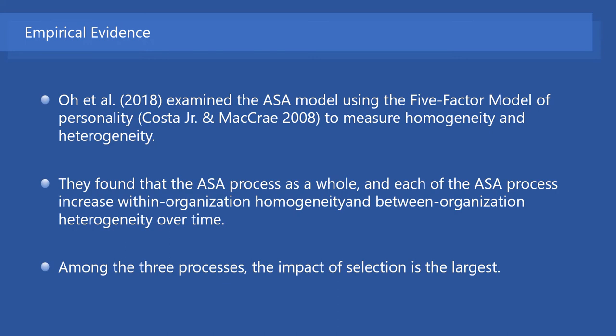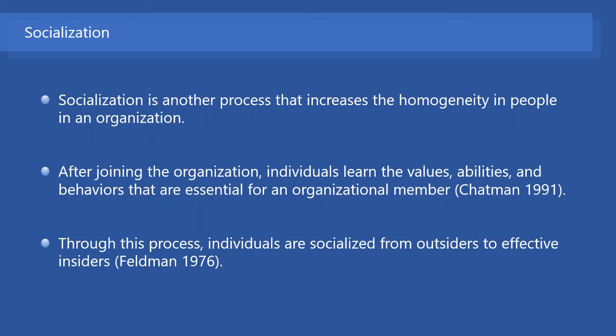Another notable finding in their study is that, among the three processes in the ASA model, the impact of selection is the largest in the progression of within-organization homogeneity and between-organization heterogeneity. Although not included in the original ASA model, socialization is regarded as another process that increases the homogeneity in people already employed by the organization.